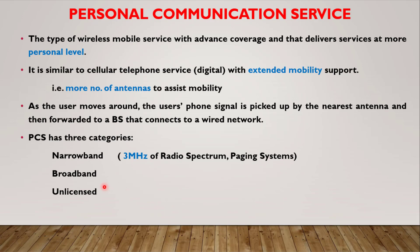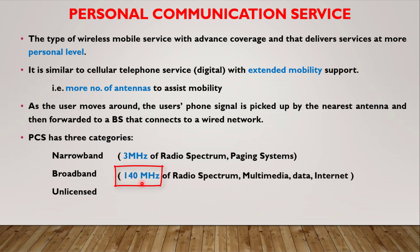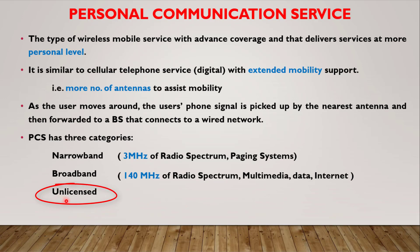On the other hand, the broadband category uses 140 megahertz of radio spectrum which can be used for internet data and multimedia services. The third one is unlicensed, which means that unutilized spectrum can be used for the transmission of voice or messages. This unutilized spectrum is used for the communication.